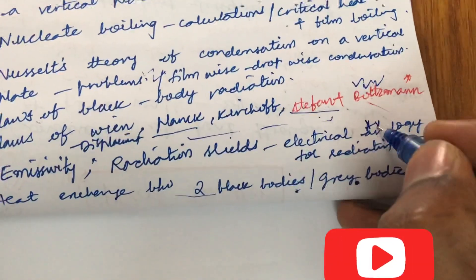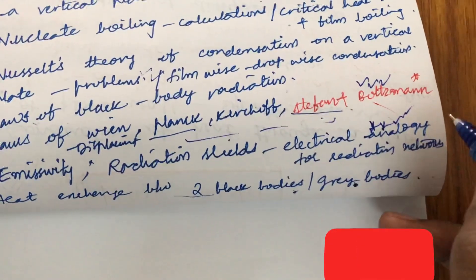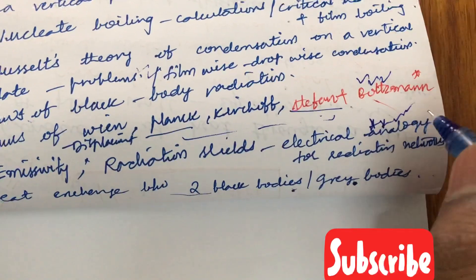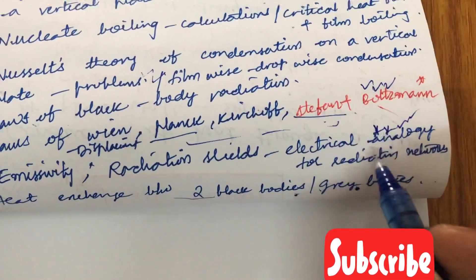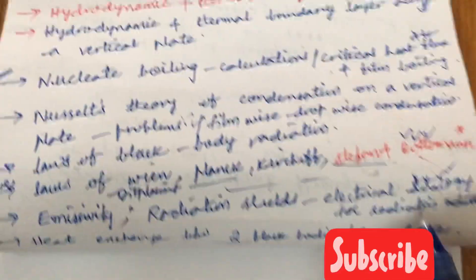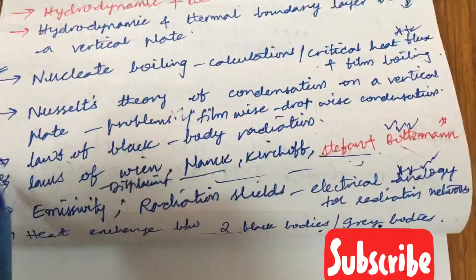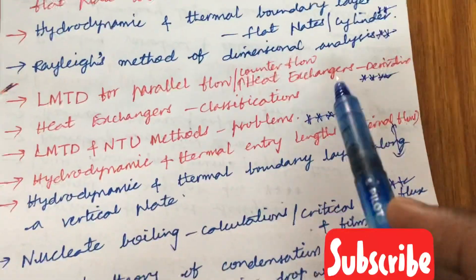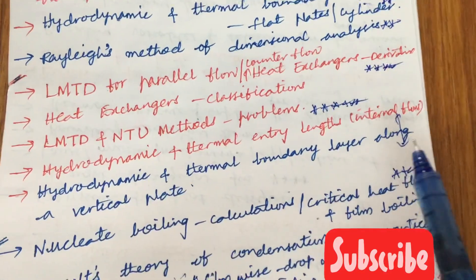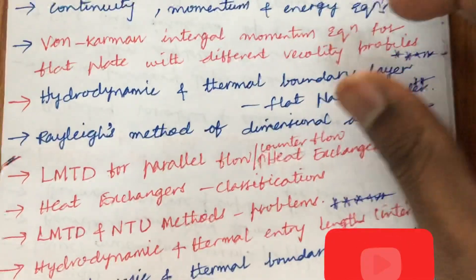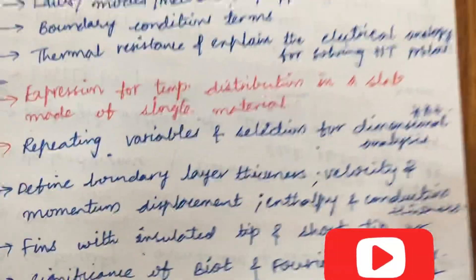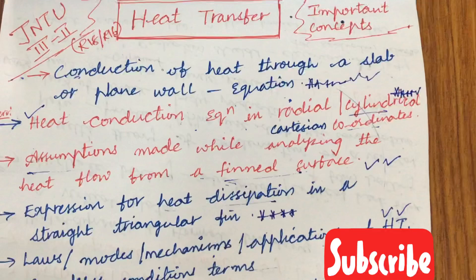One of the five mark questions which is asked several number of times is explain the term electrical analogy for radiation networks. This is all about unit 5. You can expect one question from this. The previous part is all about unit 3, you can expect two questions from unit 3 and unit 2, as well as even from unit 1 we can expect two questions.